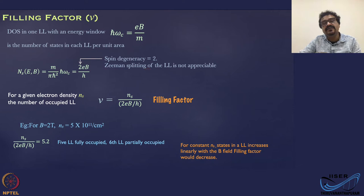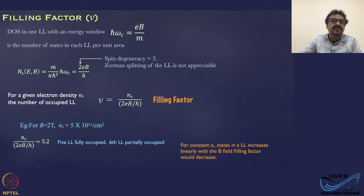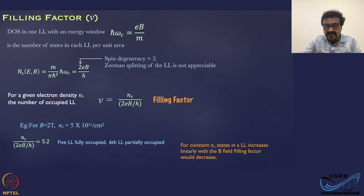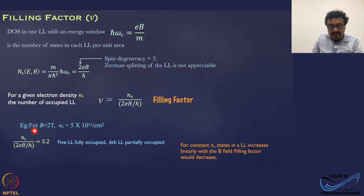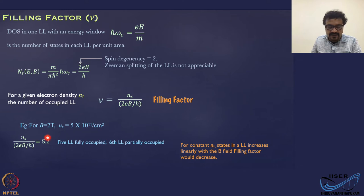We have assumed that the Zeeman splitting is not appreciable, which is why we multiplied by 2. If the field is very high, you need to consider spin splitting of the Landau levels separately. For a given electron density n_s, the number of Landau levels occupied is given by n_s divided by the number of states in each Landau level at a given B field — this quantity is called the filling factor, generally represented by ν. For example, at B = 2 T with n_s = 5×10¹¹ cm⁻², ν ≈ 5.2, meaning 5 Landau levels are fully occupied and the 6th is partially occupied.